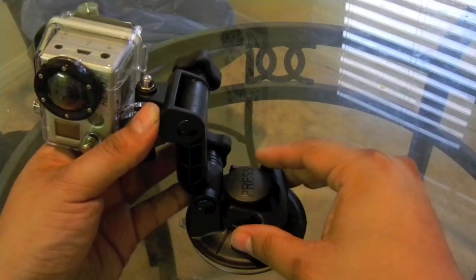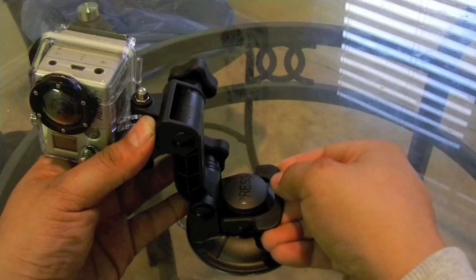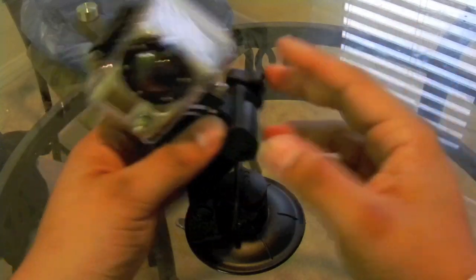What you will do is just put it on the glass, then this big button that says press, you will press it and it attaches automatically. Then what you will do is just lock it in place. Now you got the camera all locked.